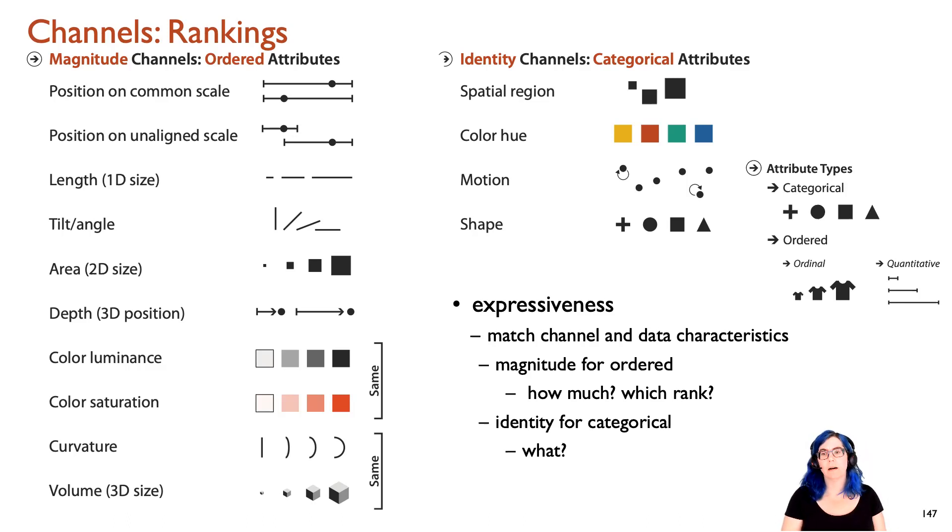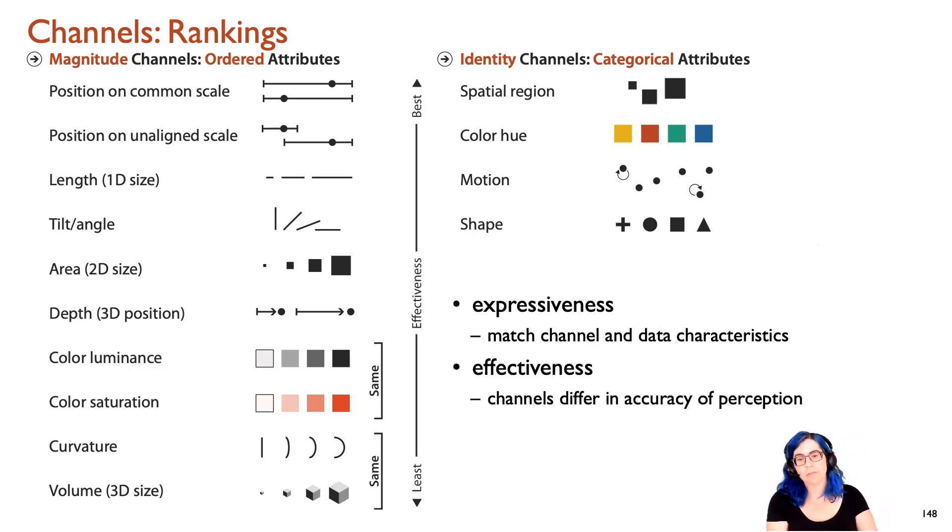The other idea is that effectiveness is also encoded in my diagram here. I deliberately have ordered them from top to bottom. These channels differ in how accurately we can decode the data that the visualization designer has tried to encode with these visual channels. There are literally over 100 years of perceptual experiments that have been done to try to understand how the human visual system responds to these different channels. This is a rough ranking from top to bottom of the more accurate down to the less accurate.